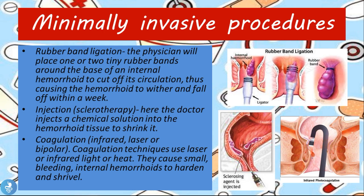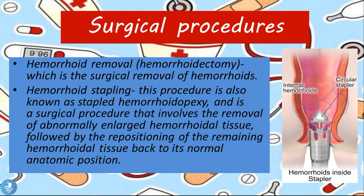Coagulation can be done by infrared laser or bipolar coagulation. These techniques use laser, infrared light, or heat to cause small bleeding internal hemorrhoids to harden and shrivel. As shown in the picture, infrared photocoagulation targets infrared rays at the internal hemorrhoid, causing it to harden, shrivel up, and eventually fall out.